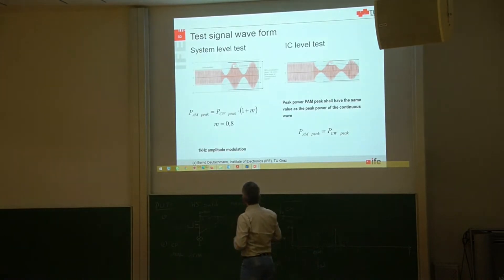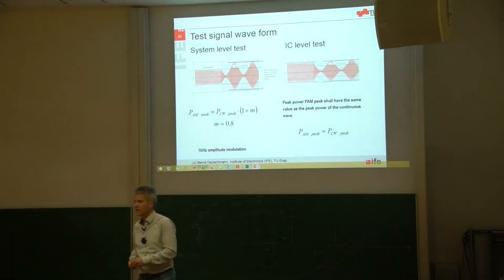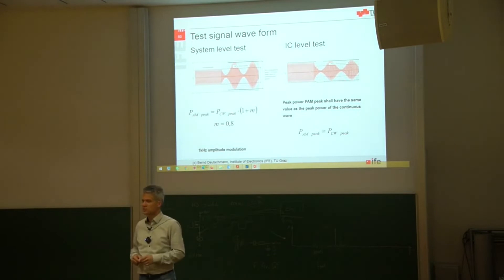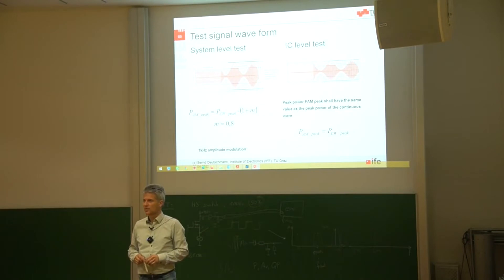The interesting thing is why do we use a one kilohertz amplitude modulation? We could also use 10 kilohertz, 100 kilohertz, it's just a button at the signal generator. But there must be a special reason why they have chosen one kilohertz. Any idea?